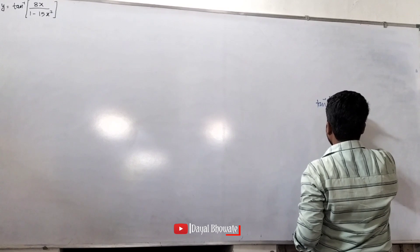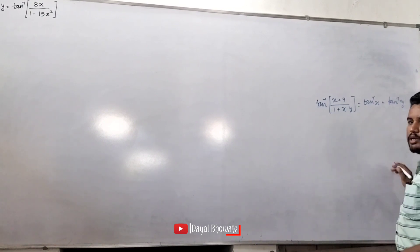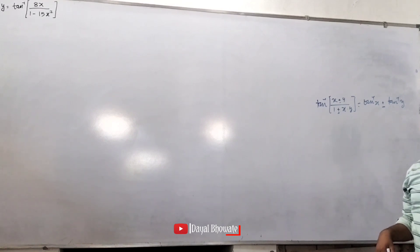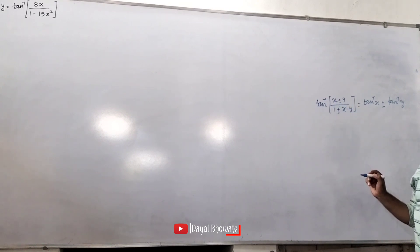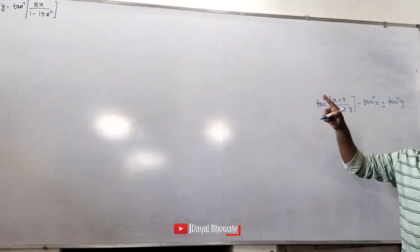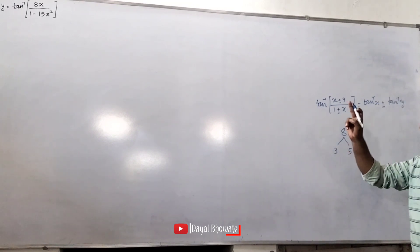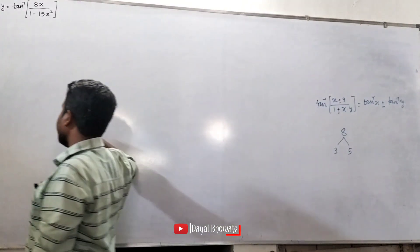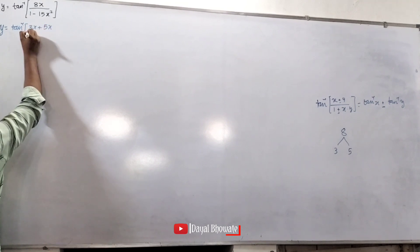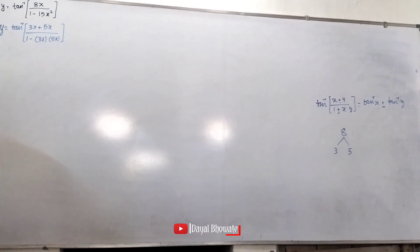x plus y divided by 1 plus x into y is equal to tan inverse of x plus tan inverse y. So y is equal to tan inverse of x plus 5x divided by 1 minus x into 5x. Here, 3x plus 5x gives 8x — there is a difference between x squares.